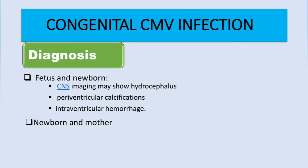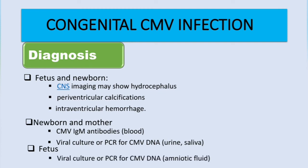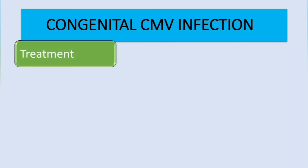For the newborn and the mother, we can detect CMV IgM antibodies in blood, perform viral culture, or use polymerase chain reaction (PCR) to detect CMV DNA, with urine and saliva as the main samples. For the fetus, viral culture or PCR for CMV DNA can be done using amniotic fluid, and CMV IgM antibodies can also be detected in fetal blood.